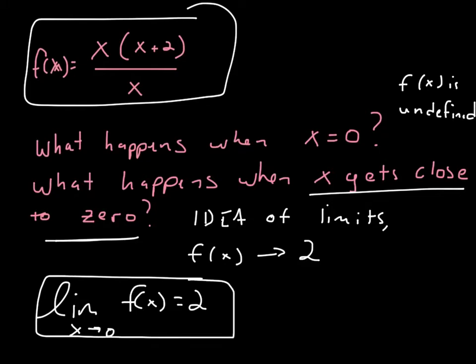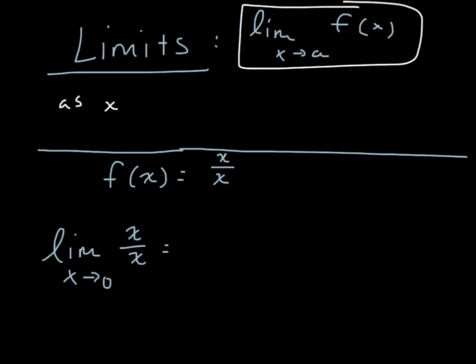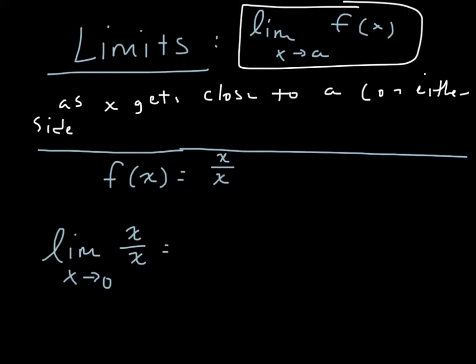The idea is that instead of putting in a direct input, we're putting in values that are close to that — close to 0. Written in general form, as x gets close to A on either side — from the left-hand side or the right-hand side — the limit is asking: what does f of x get close to?